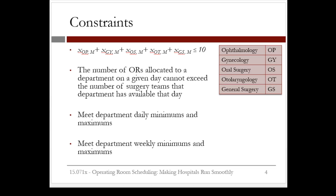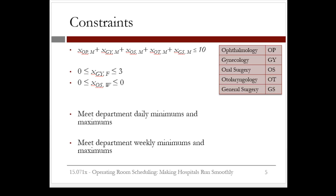The next set of constraints is that the number of operating rooms allocated to a department on a given day cannot exceed the number of surgery teams that are available that day. For example, for gynecology on Friday there are three teams available, so X_gynecology_Friday must be between 0 and 3. For oral surgery on Wednesday, it must be between 0 and 0, because the oral surgeon is only in on Tuesdays and Thursdays.